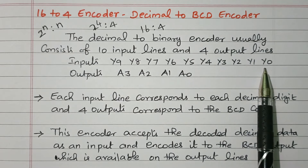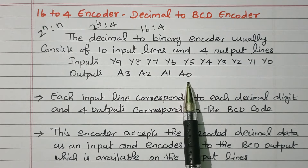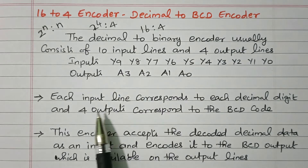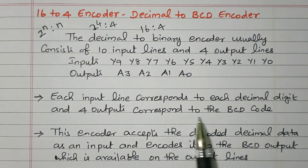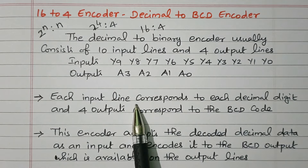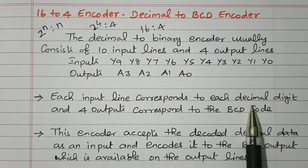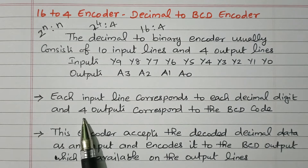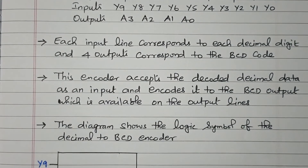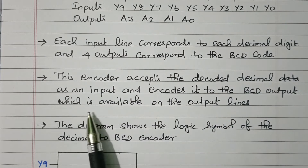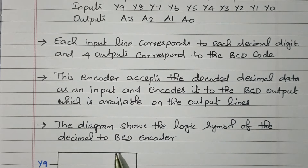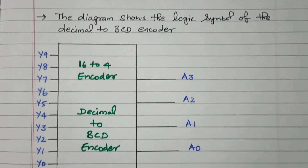Y9 to Y0 are the inputs, and A3, A2, A1, A0 are the 4-digit outputs. Each input line corresponds to a decimal digit, and the 4 outputs correspond to the BCD code. This encoder accepts decoded decimal data as input and encodes it to the BCD output available on the output lines. The diagram shows the logic symbol of the decimal to BCD encoder.